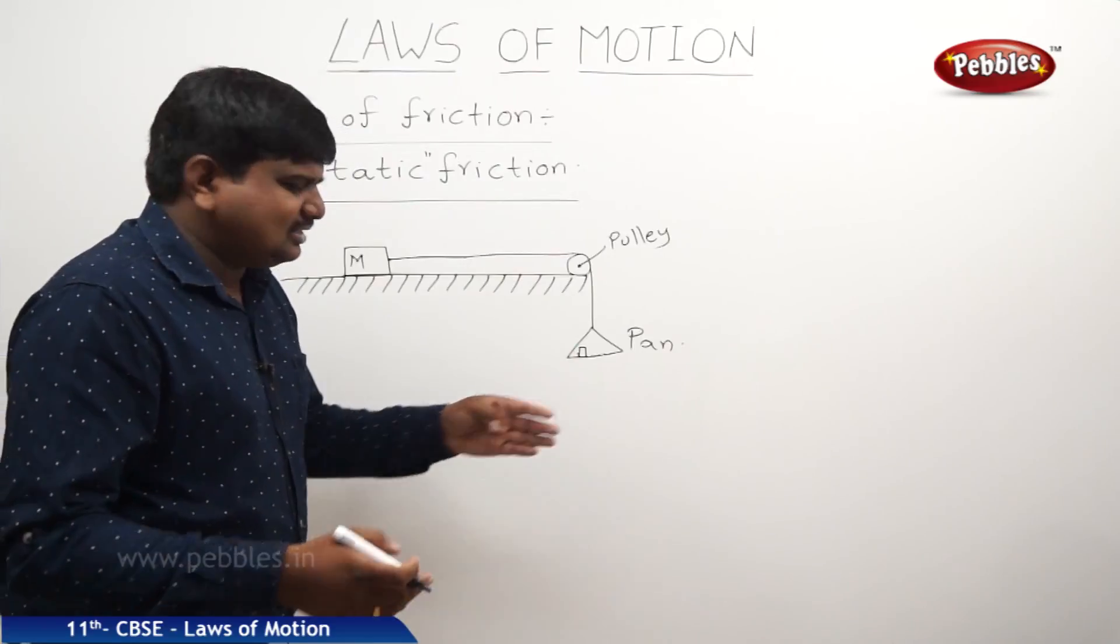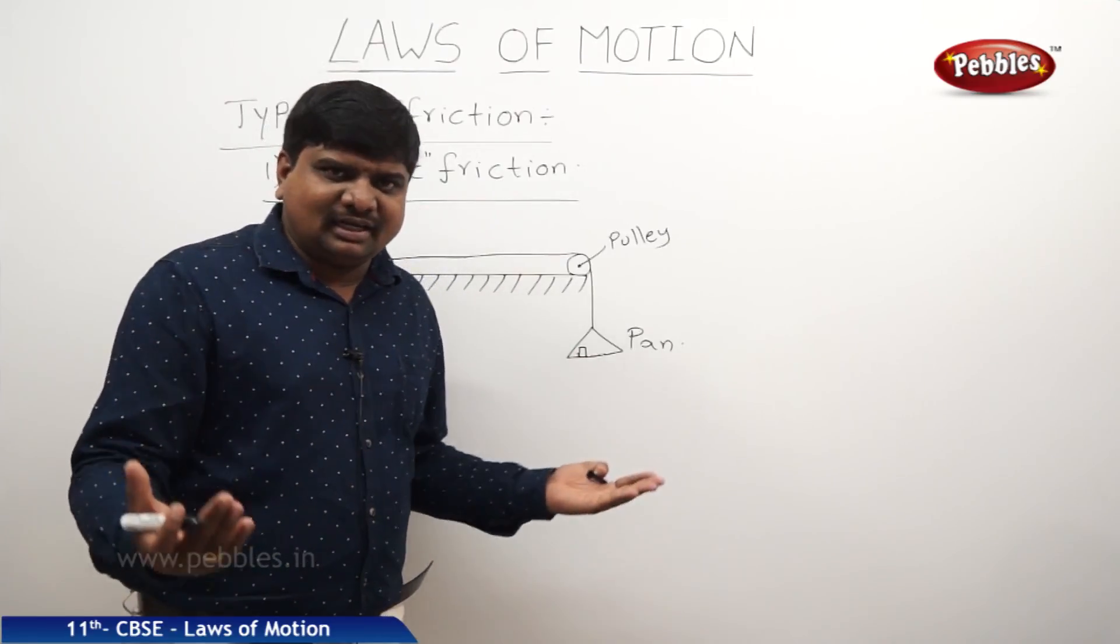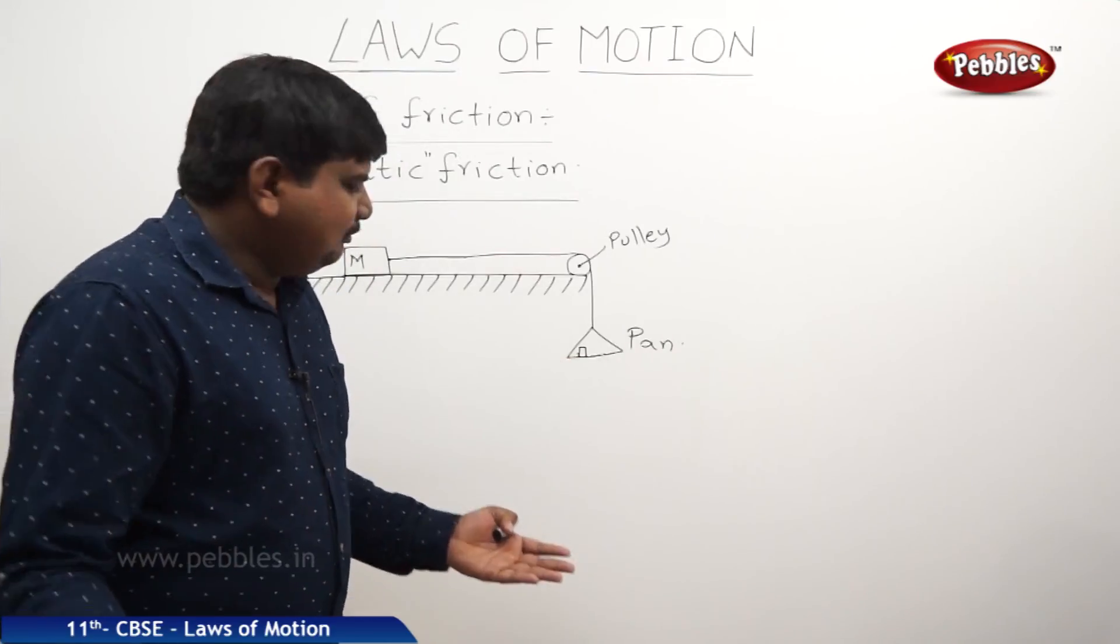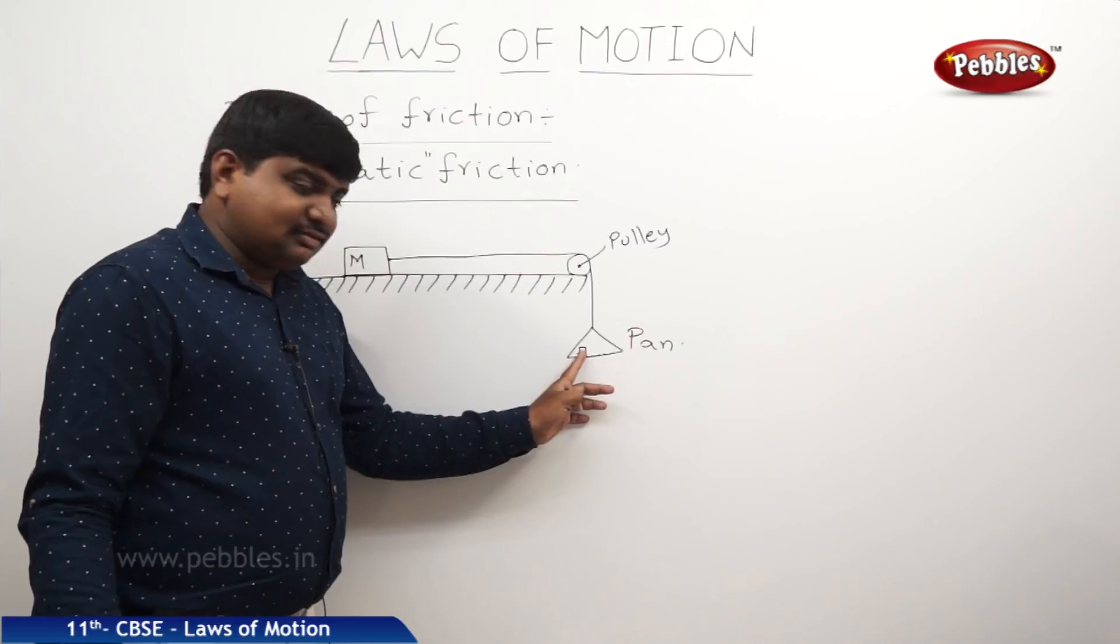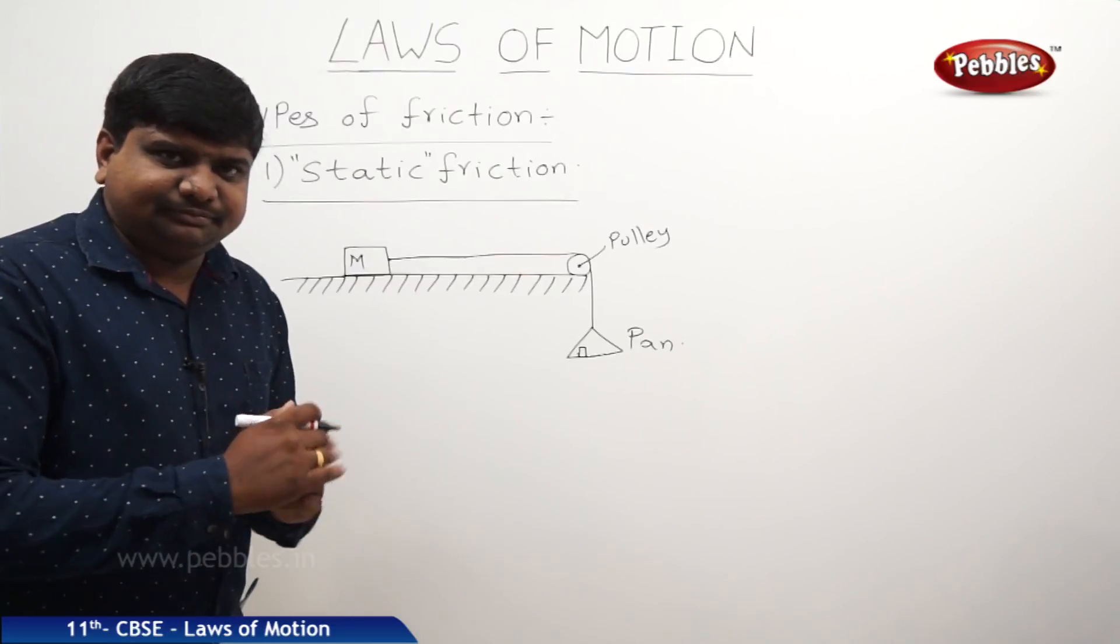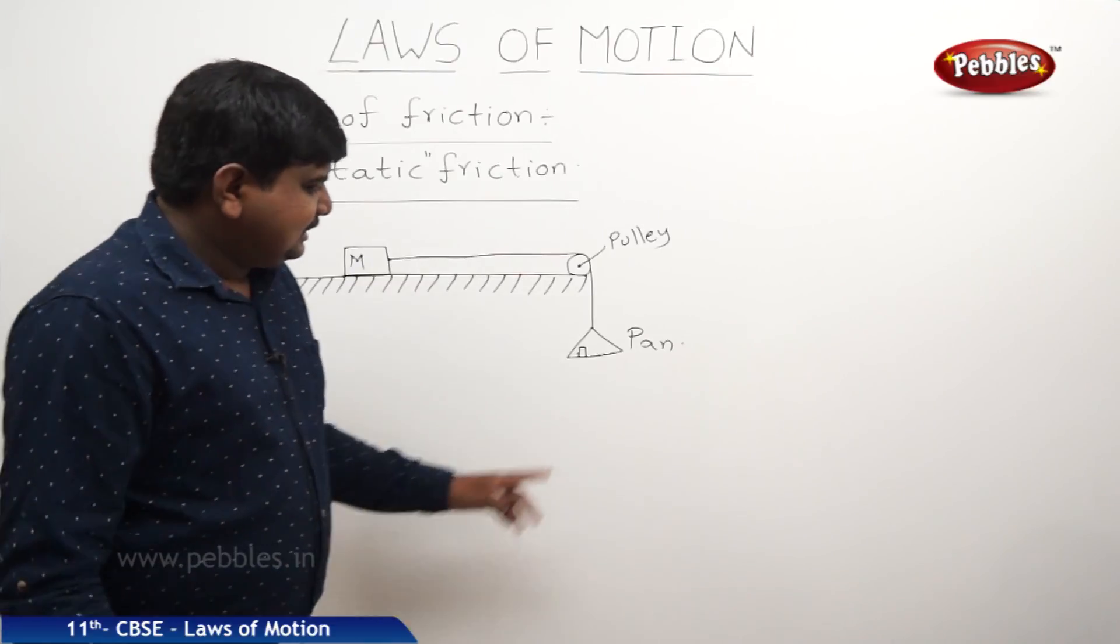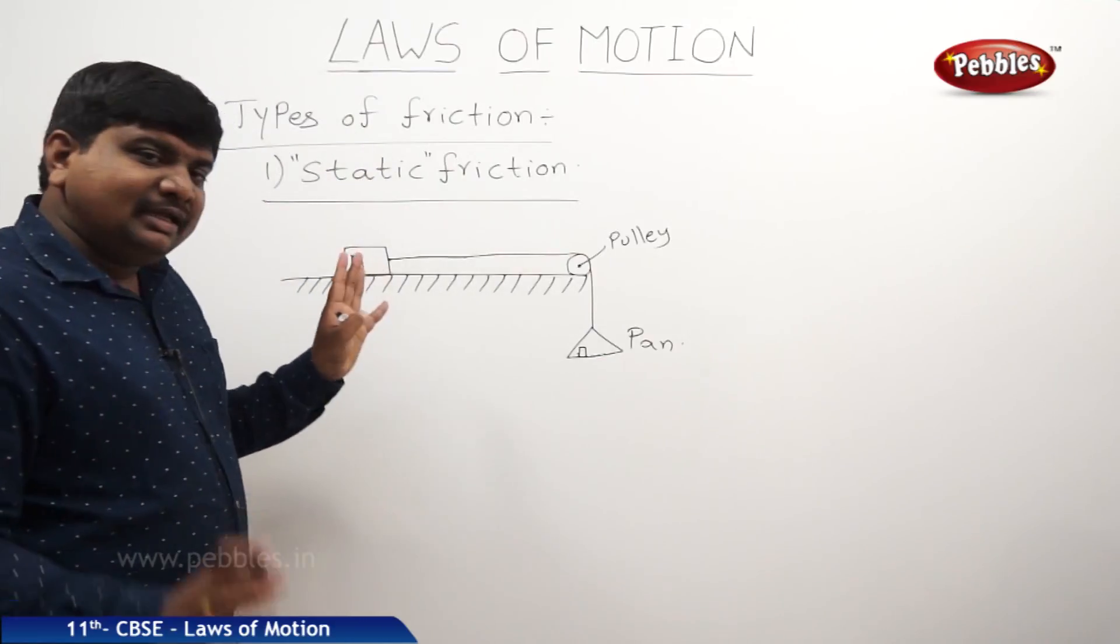That means this one weight is some finite grams—50 grams or 100 grams or 200 grams, whatever may be available. This pan is loaded with this weight. This weight automatically applies a force to move this object. But if the force is not sufficient to move, the body will be in rest.